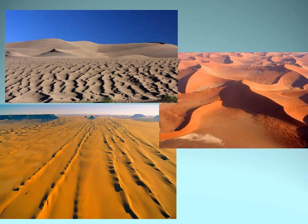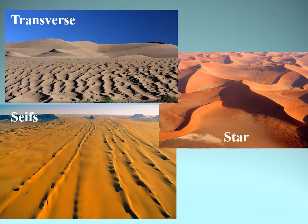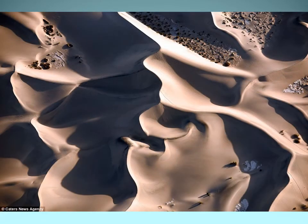And then we have the other types. We have our transverse on the top left — sort of a ripple effect. We have our seifs in the bottom left, long and narrow. And then on the right is our star dune, which is actually quite striking. This is another striking view — I showed this one earlier in the lecture — but again, it's one of the best pictures I can find of a star dune.